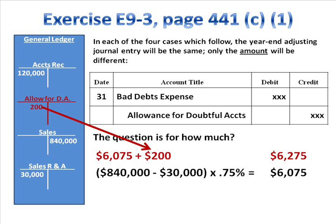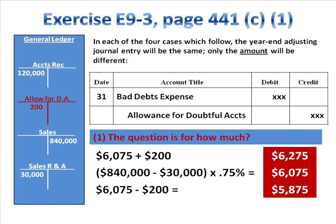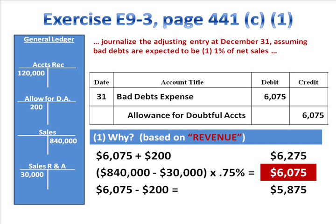$6,075 is a good choice, but there are two others. We could add the $200 debit balance to get $6,275, or subtract it to get $5,875. Three choices: $6,275, $6,075, and $5,875. The correct answer is $6,075. This was based on revenue — 3/4 of 1% of net sales is an income statement approach. The allowance for doubtful accounts is on the balance sheet and has nothing to do with this calculation. Ignore the balance of the allowance account and make the journal entry for $6,075.